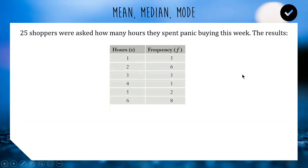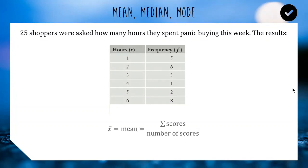We have a number of hours: the least was one hour from five people. We have eight people who have panic bought for six hours — outcomes and frequency. To find the mean, which is the mathematical average, it's the sum of all the scores — that's what this Greek letter sigma stands for — divided by how many scores there are.